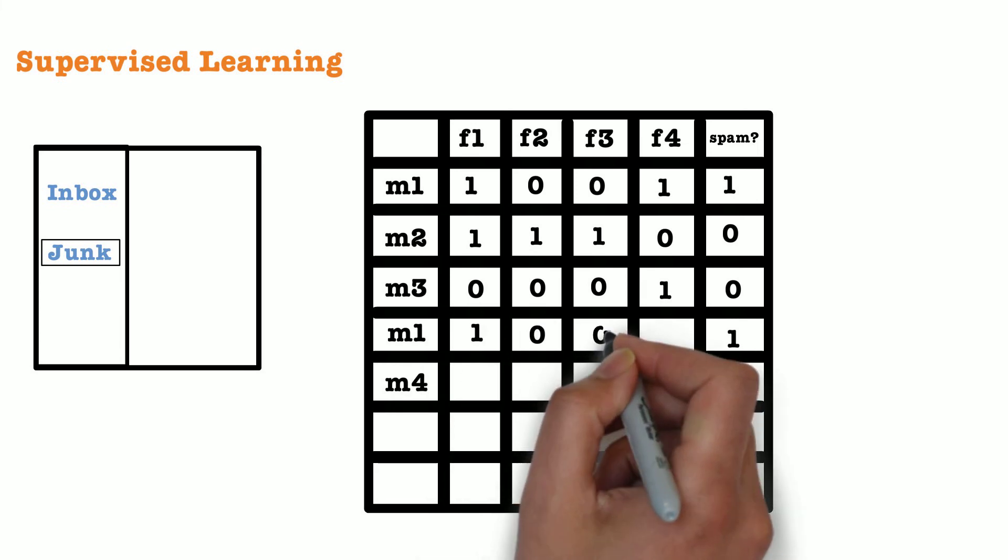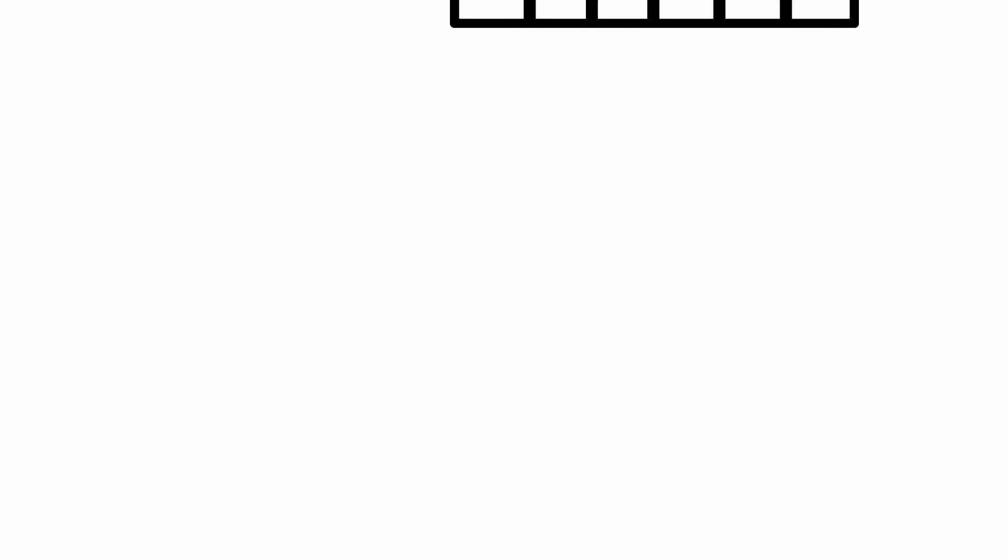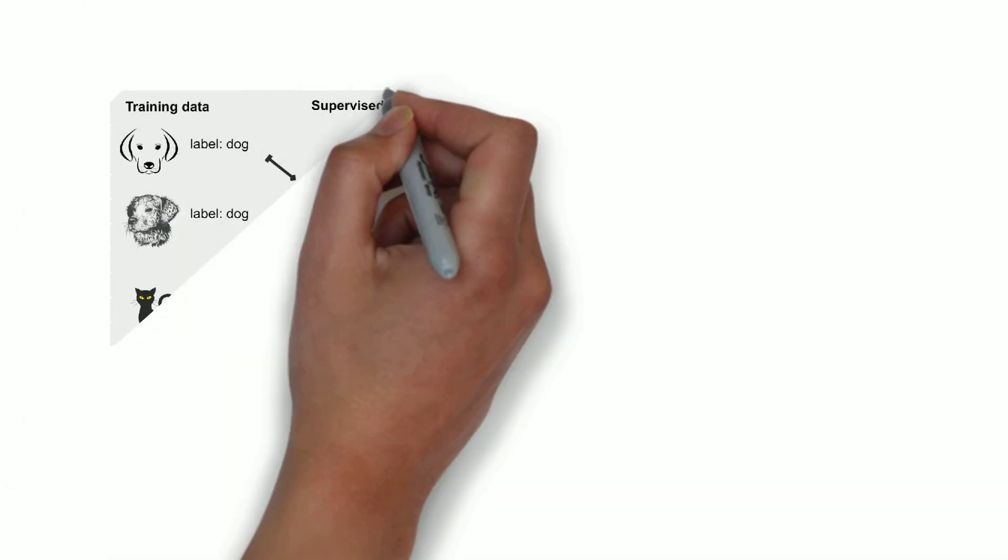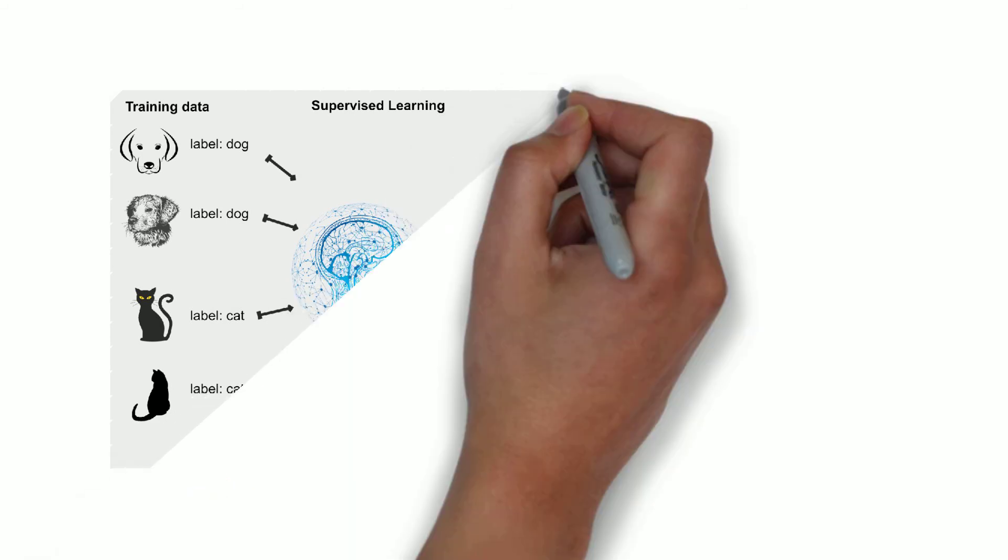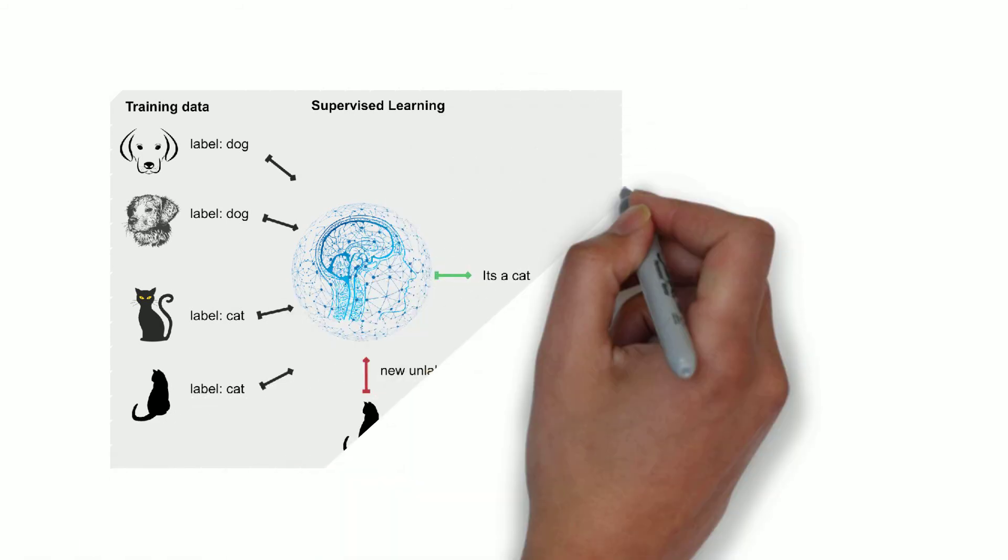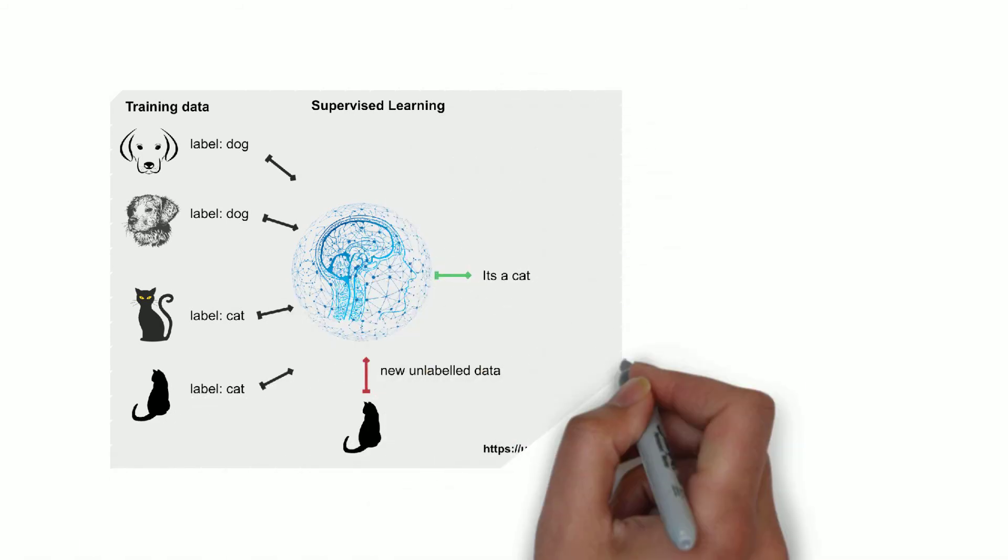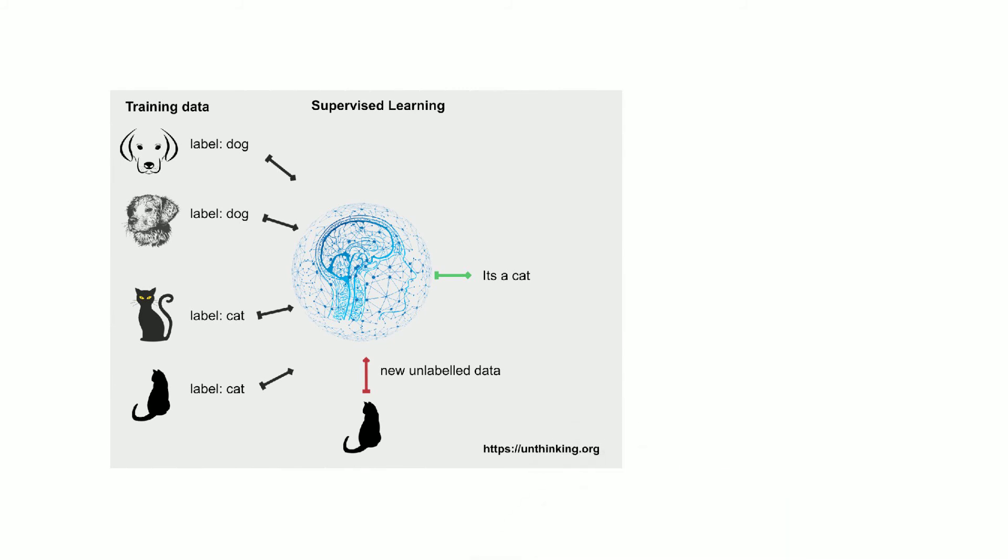Now all the program needs to do is study this pattern and for a new email predict if this is a spam or a non-spam. Therefore, in supervised learning the machine learning program needs a set of labeled data to train itself so as to predict a future instance.